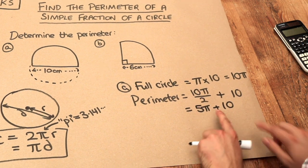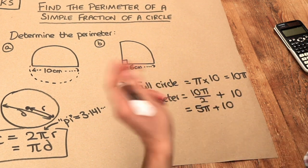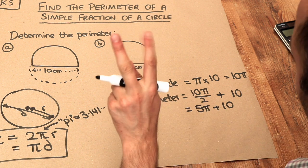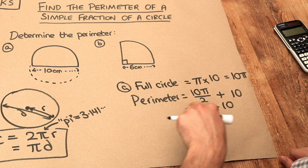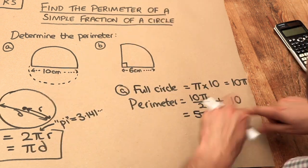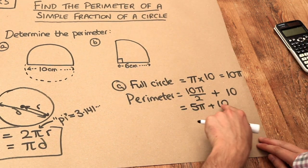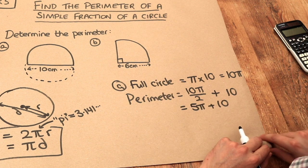Now you might wonder if this can be simplified. Does this become like, I don't know, 15 pi? But it doesn't because these are not like terms. This is a pi term, but this doesn't have a pi in it. If you had 5 pi plus 10 pi, then yes, that would be 15 pi. But because these are a mixture of different terms, you can't simplify it any further.